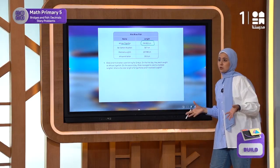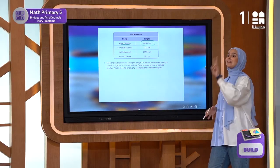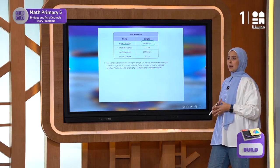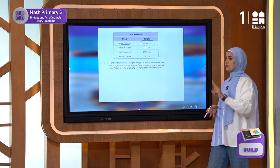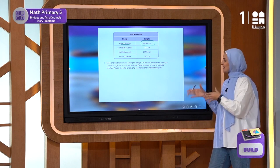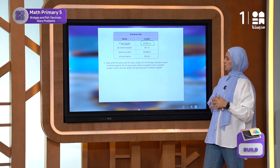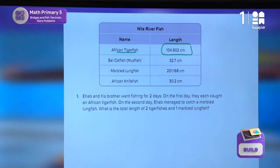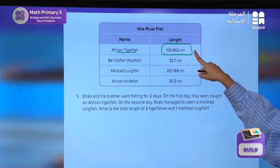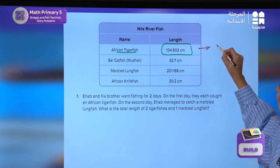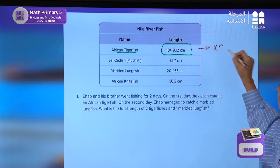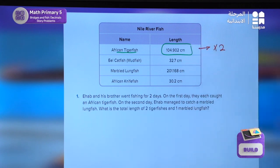And we are going to write it twice. Why? Because both of them caught the same type of fish. So we are starting with this — this will be written twice. Now, can we start? Yes, we can.